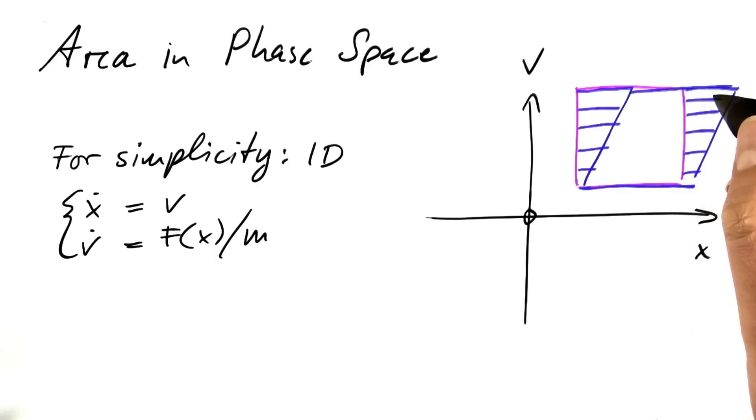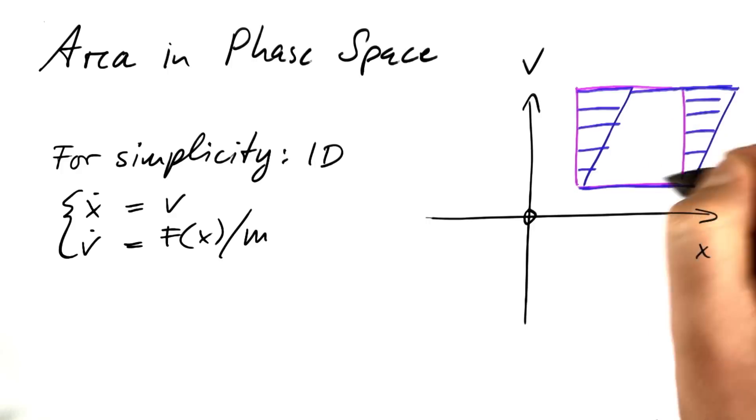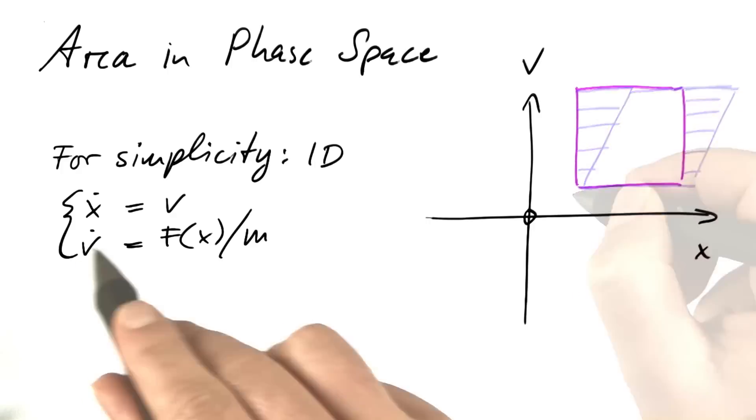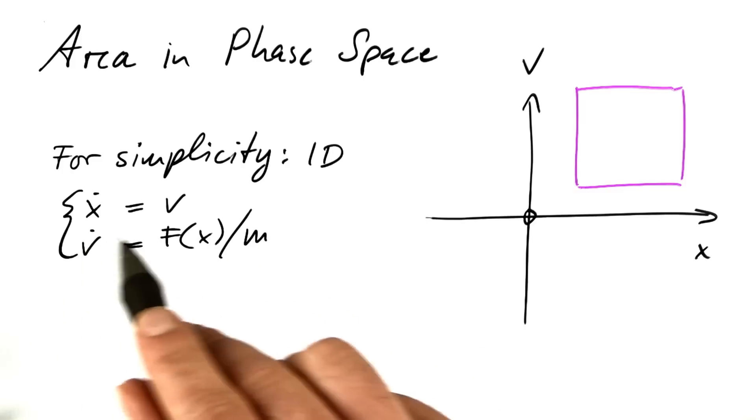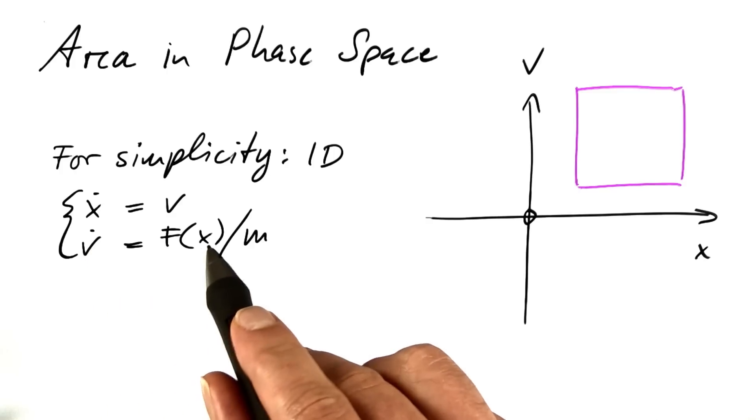Simply use this part, glue it to that part, and you see that the blue parallelogram has the same area as the purple rectangle. So, the first equation alone would not change the area. If we look at the second equation on its own, the rate of change of the velocity depends on x and on x only.